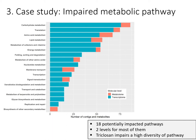Second, we wanted to identify which pathways were potentially impaired by triclosan. We can see that 18 pathways were identified as potentially impaired, and in most cases at both biological levels. Although we expected to detect lipid metabolism as impaired due to triclosan's mode of action, it is clear that triclosan impairs a wide diversity of pathways directly and indirectly.